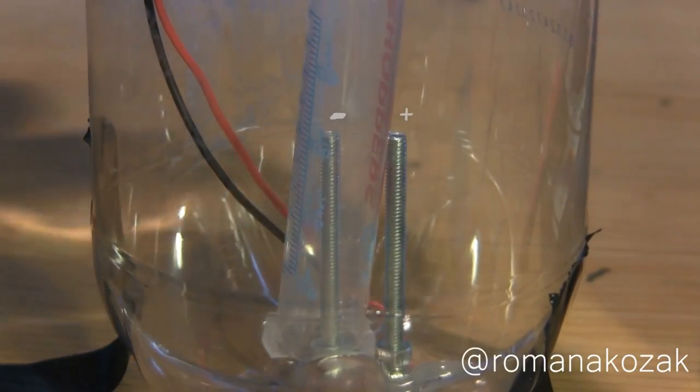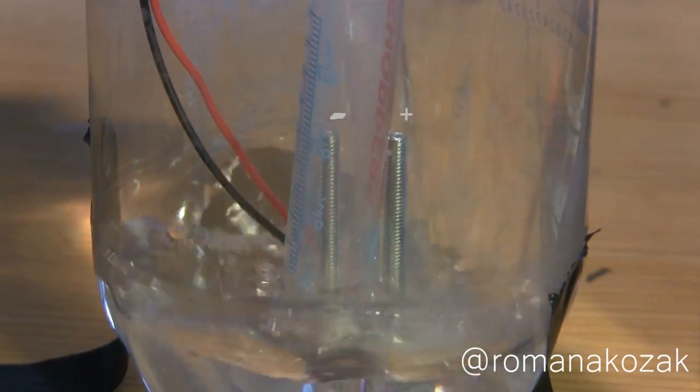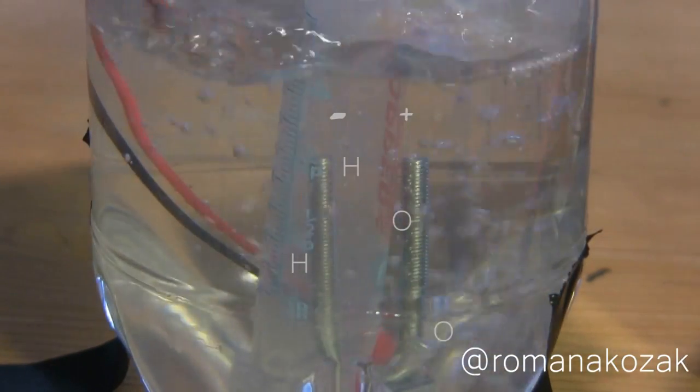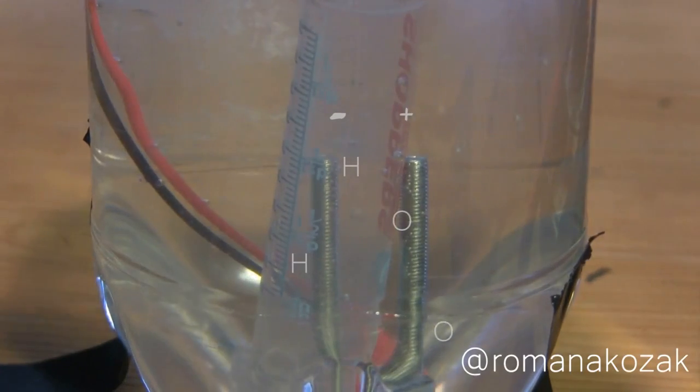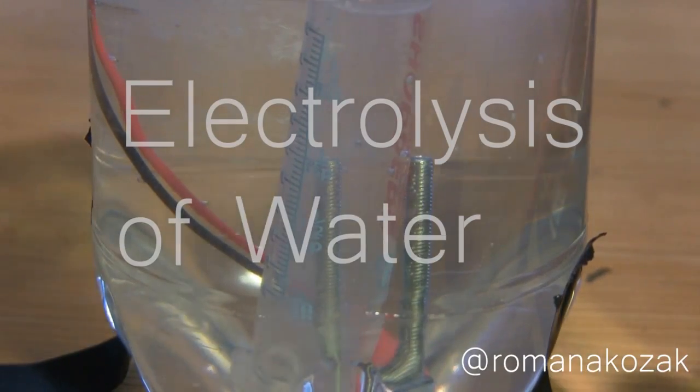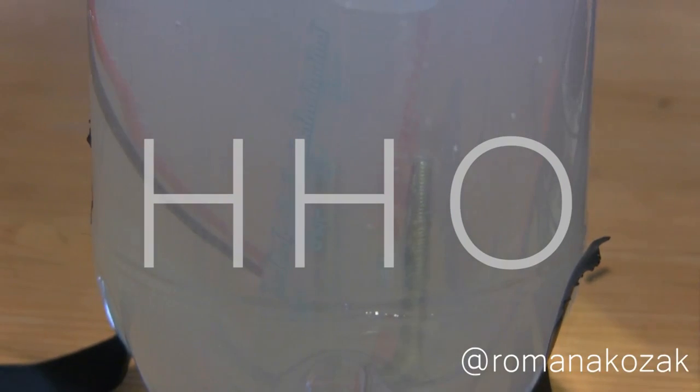Next pour the solution into the water bottle and you should instantly see hydrogen and oxygen bubbles forming on the electrodes. This is a process called electrolysis of water and it splits water into hydrogen and oxygen gas.